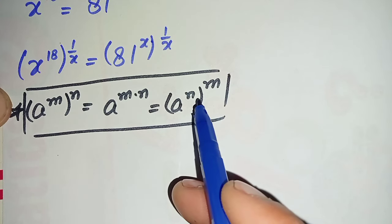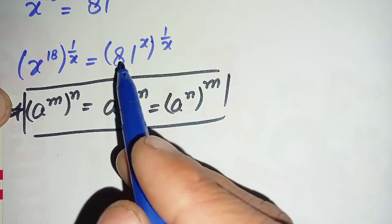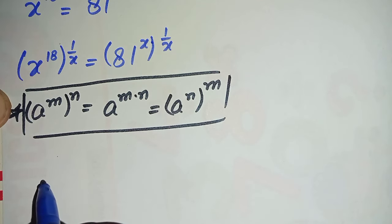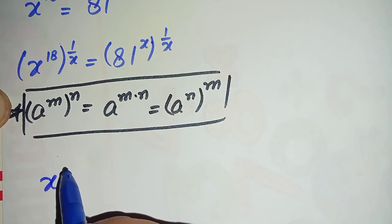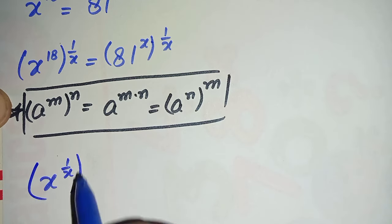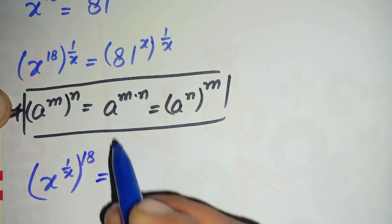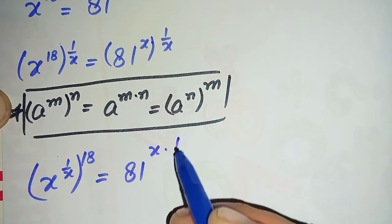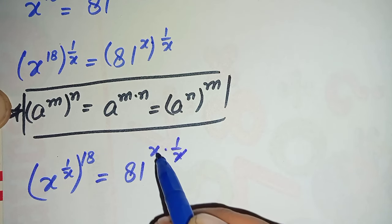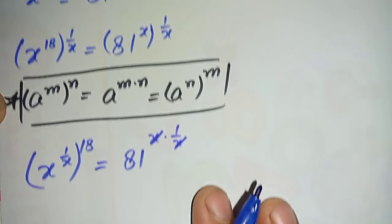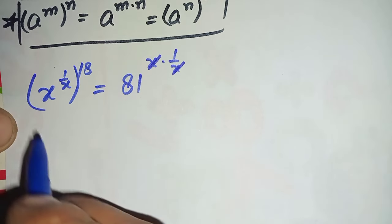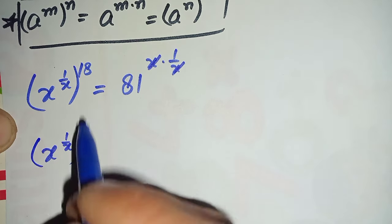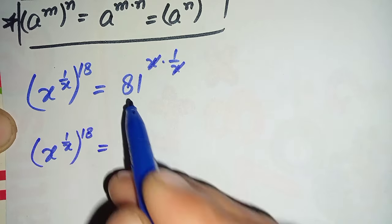By using this exponential property on both sides, on the left hand side we interchange the powers with each other, and on the right hand side we multiply the powers. This equation becomes x raised to power 1 over x, raised to the power 18, is equal to 81 raised to power x times 1 over x. Here this x and x cancel, leaving 81.